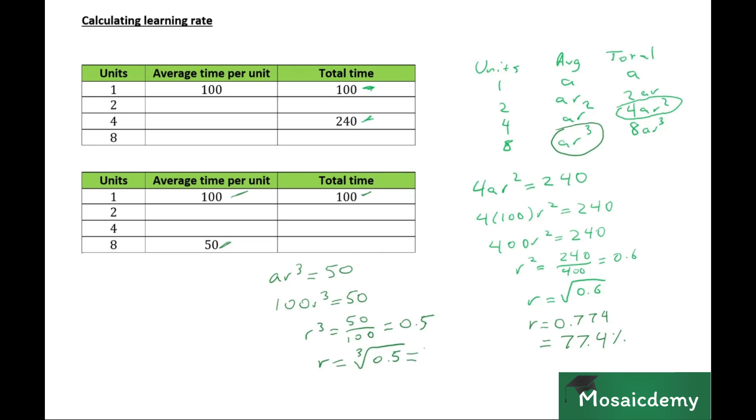So in this case, the learning rate is 79.37%. The bottom line is, whenever we need to calculate the learning rate, regardless of whether we've been given the total time or the average time per unit for a certain number of units, we compare the corresponding base table formula, and then we use that to calculate R. It's as simple as that.